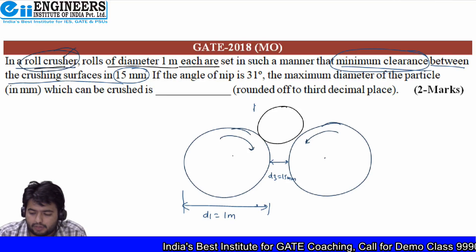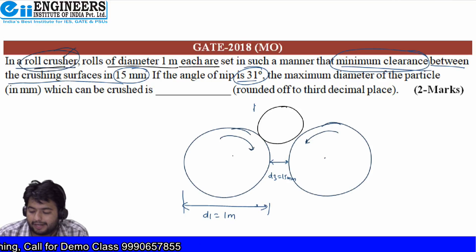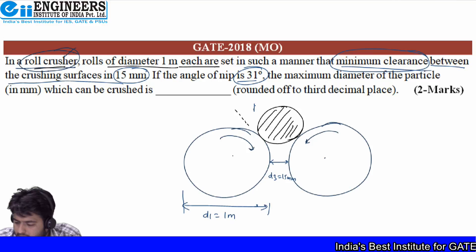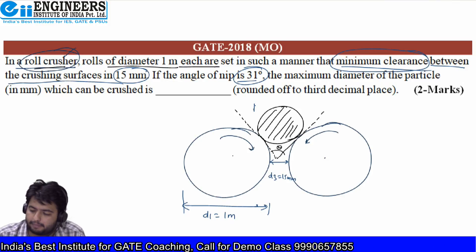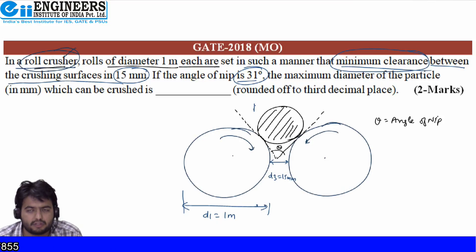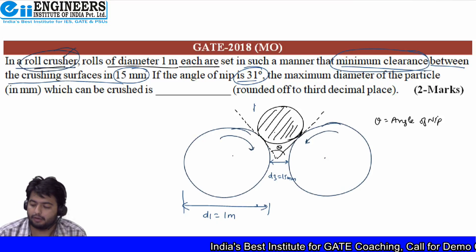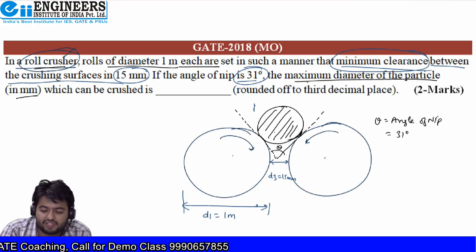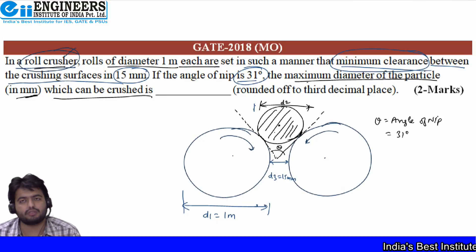If the angle of nip is 31 degrees — the angle of nip is the angle made by tangents at the points of contact of the particle with both rolls — we have to find the maximum diameter D2 of the particle which can be crushed. By bisecting the angle of nip, we get θ/2. The line joining the center of a roll and the center of the particle is perpendicular to the tangent at the contact point.